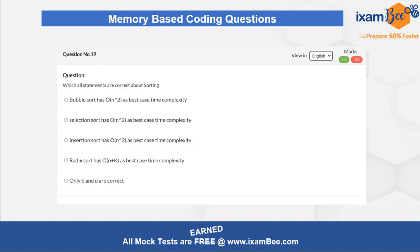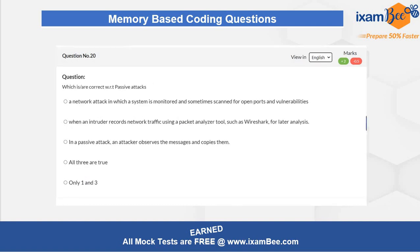The nineteenth question asks which statements are correct about sorting. You can see different kinds of sorting algorithms such as bubble sort, selection, insertion, radix, and others. You need to know the time complexities for all these basic algorithms. The twentieth and final question in this series is about passive attacks in cyber security — choose the correct answer from the options given. Wherever you feel the video was too fast, pause and attempt the question before marking your answer.